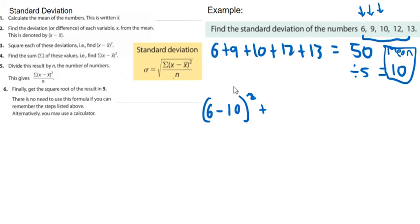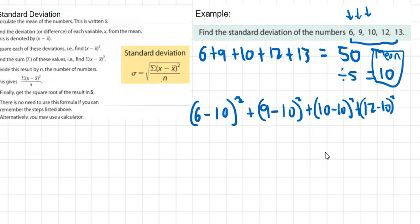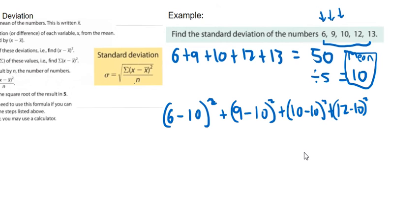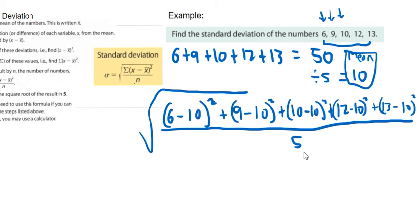So I'm going to do the same then with 9. So I'm going to take away 10 and square it. And then I'm going to do the same with 10 and with 12 and 13. And then I'm going to put it all over 5 because there's 5 numbers in the list. That's what n is. And then you have to do big square root over everything.